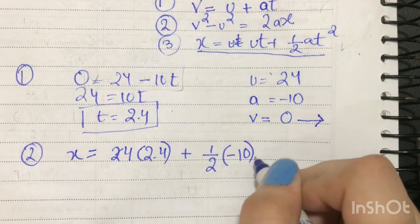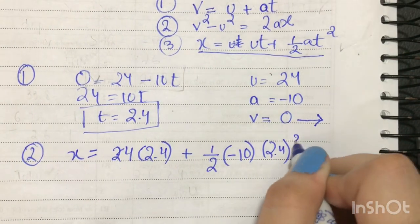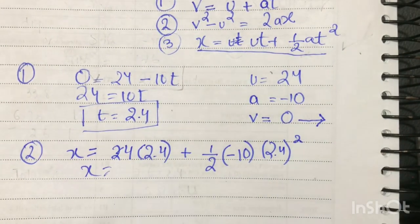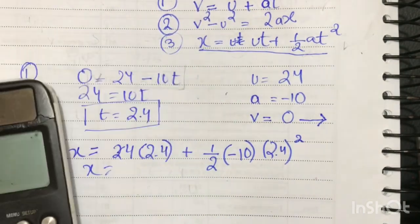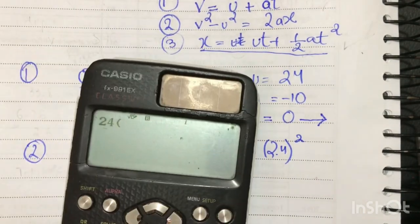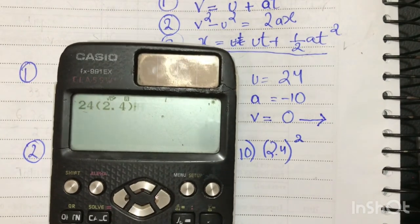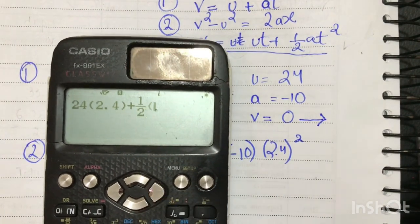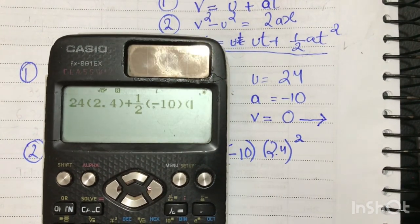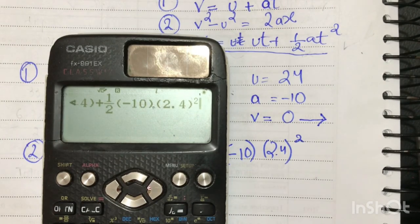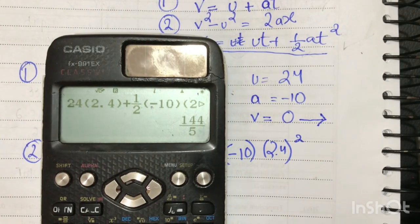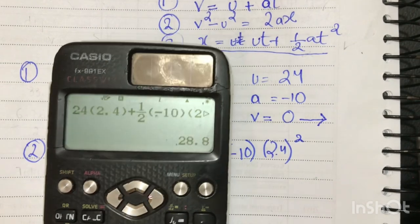So the distance traveled is 24 times 2.4 plus half times minus 10 times 2.4 squared, which is 28.8 meters.